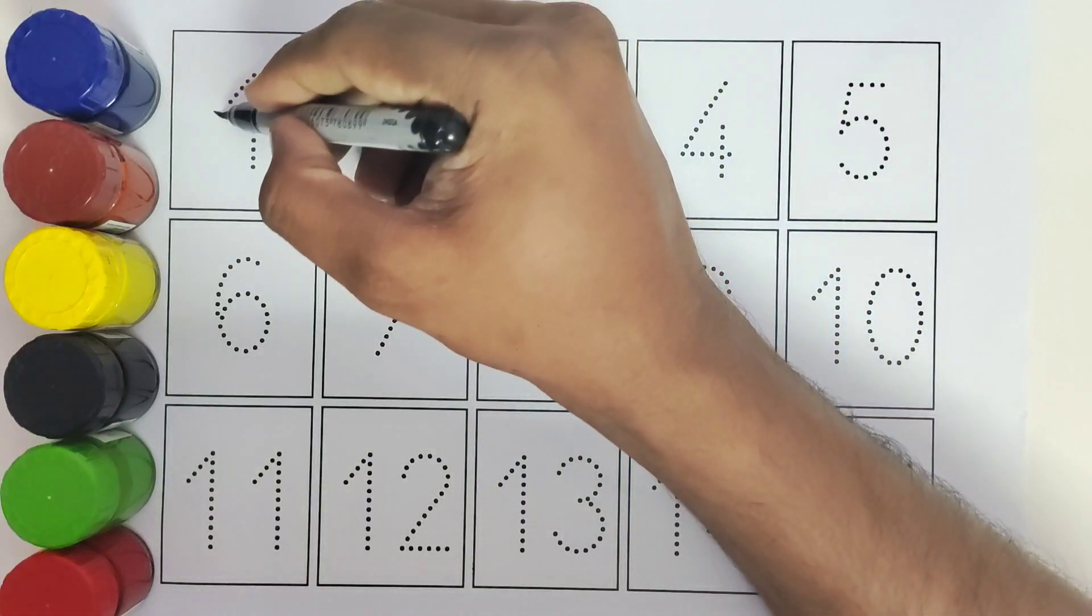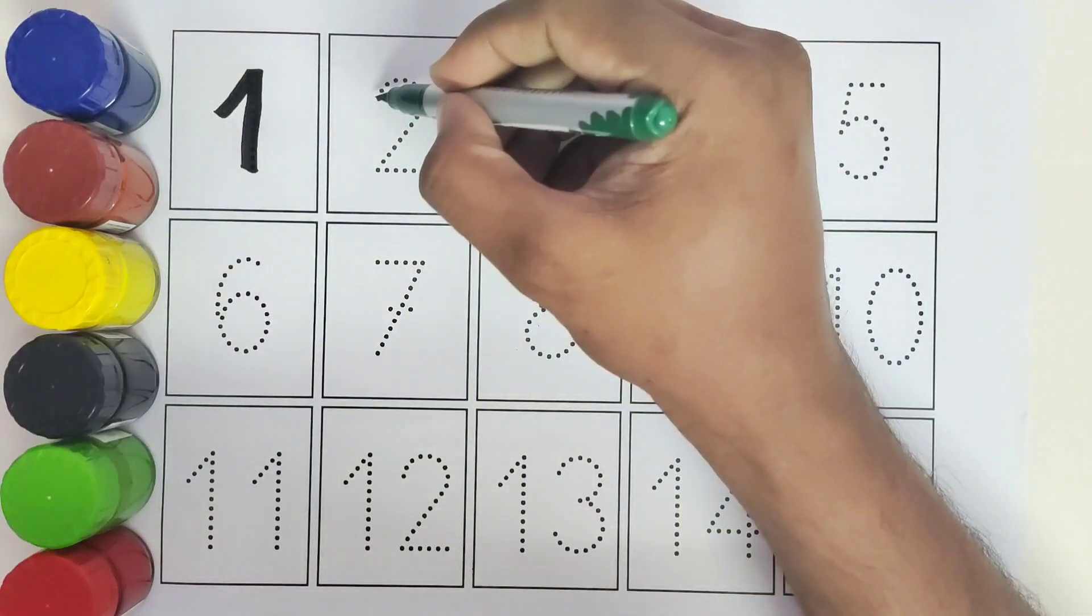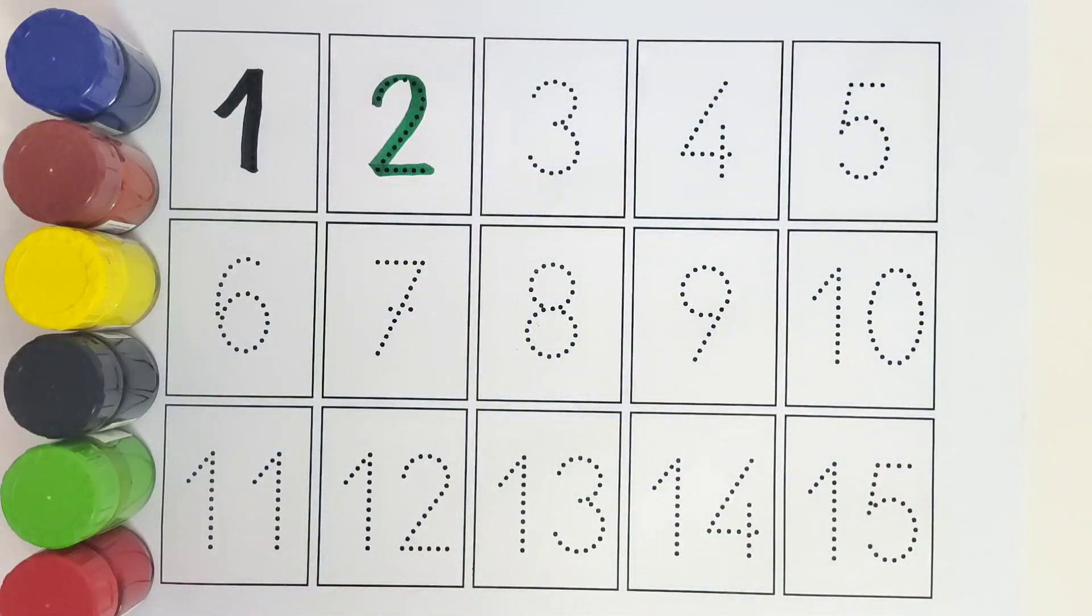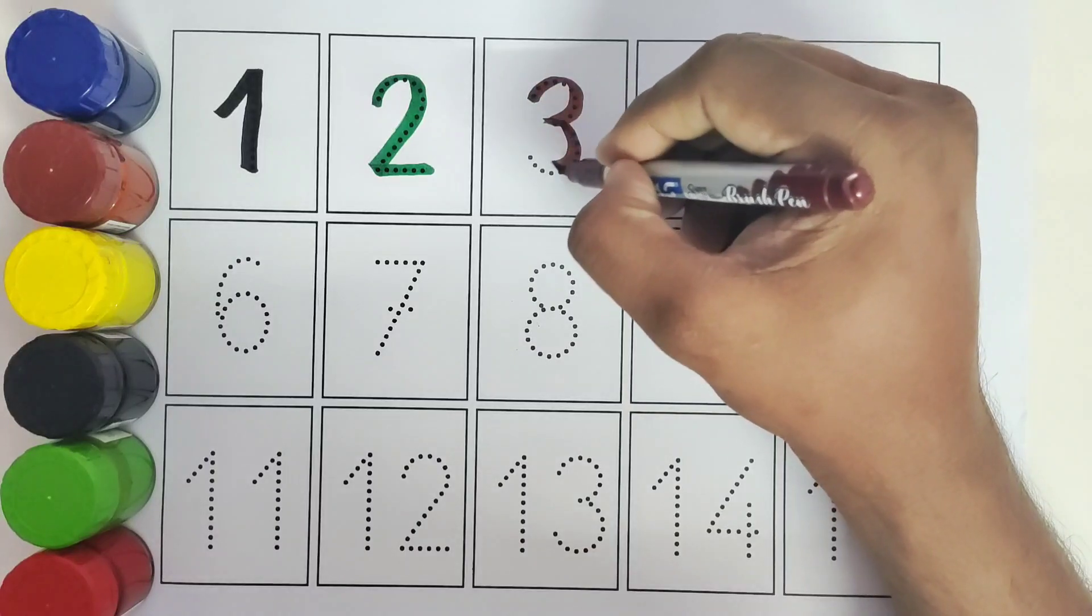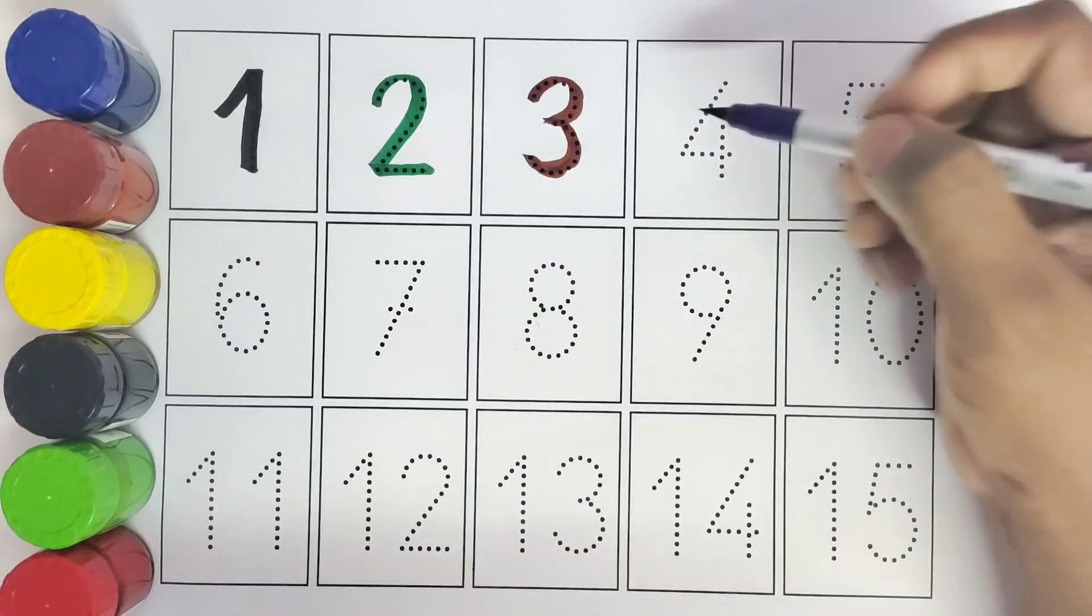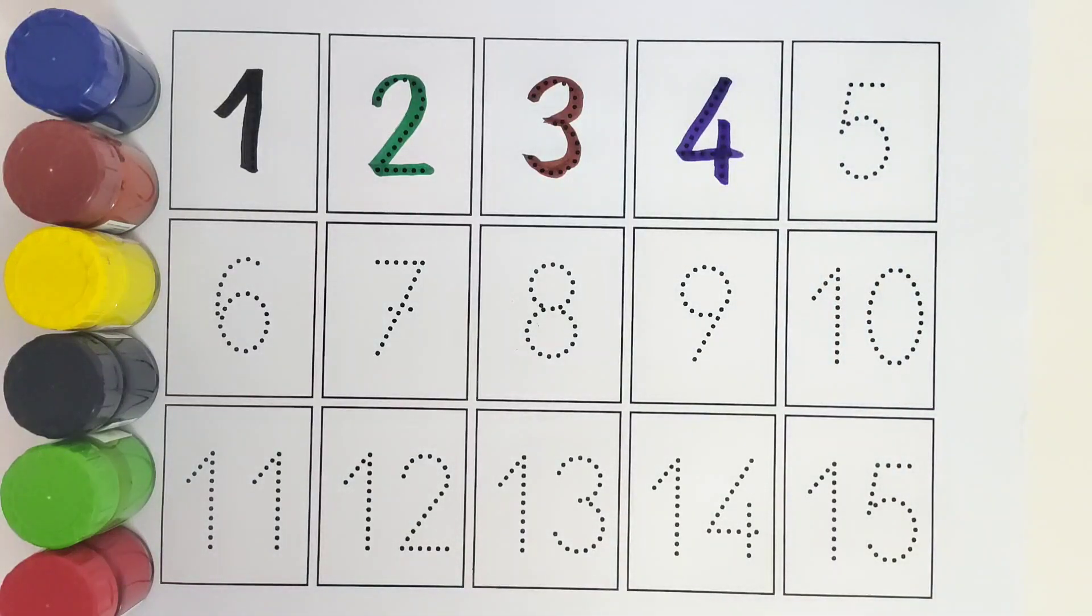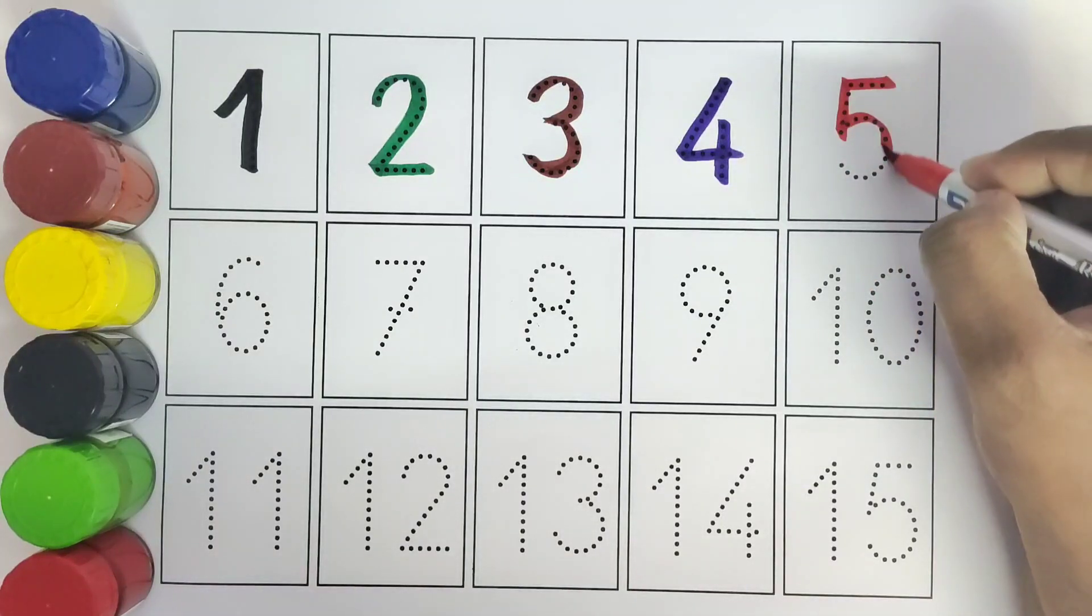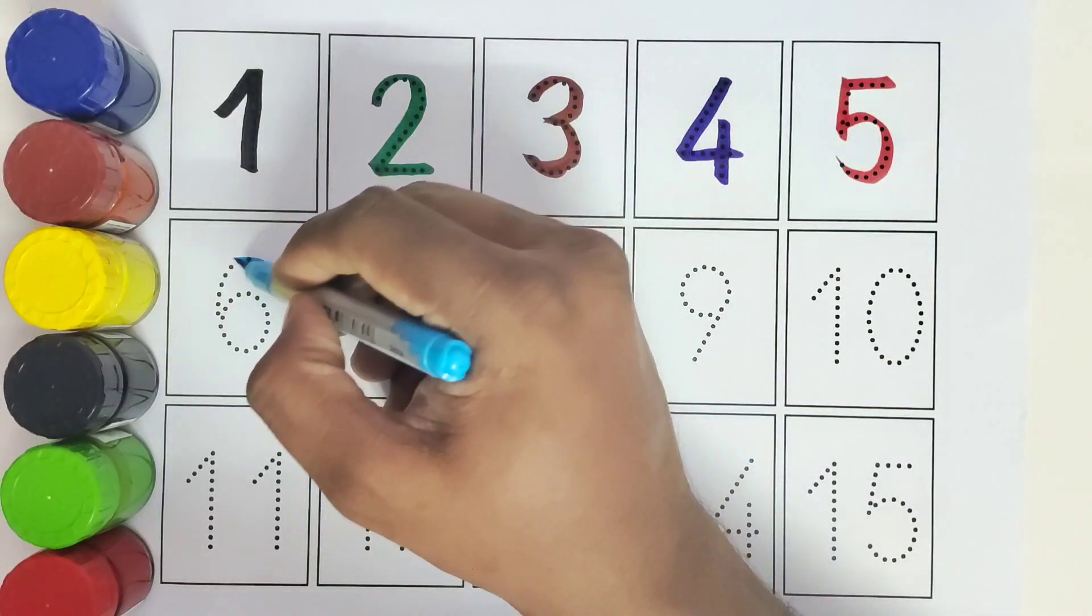1. Number 1. This is 2. Number 2. This is 3. Number 3. This is 4. Number 4. This is 5. Number 5. This is 6.